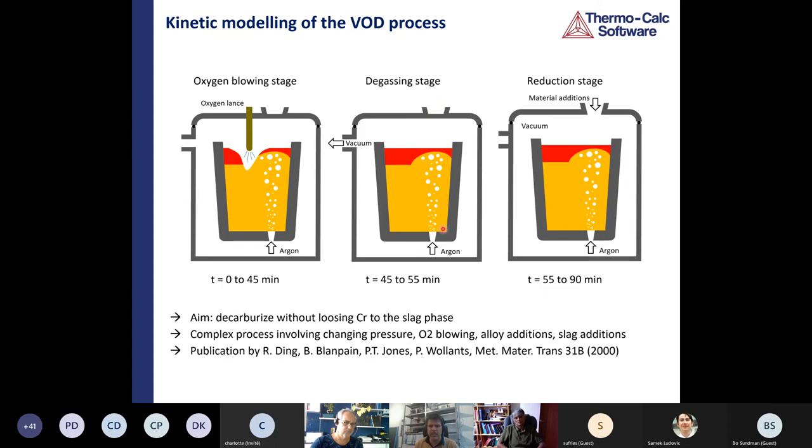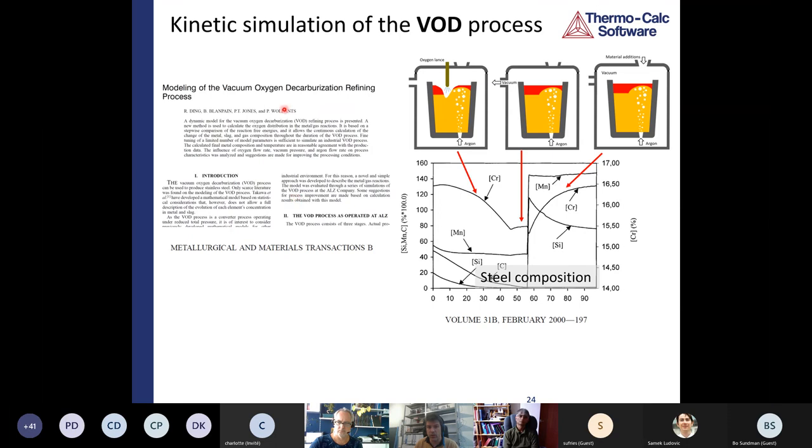We've seen that this simple model is very, very powerful at simulating even complex processes like the vacuum oxygen decarburization process for stainless steel production. A complex procedure where you start with an oxidizing stage, and then a vacuum degassing stage where you're changing pressure, and a third stage where you then add deoxidizing agents to reduce the oxygen. It sounds as if time's up. I've got two more minutes. I'm almost at the end.